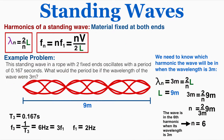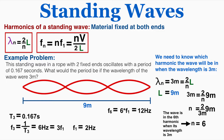The wavelength of 3 meters equals 2/n times L (which is 9 meters), so solving gives the sixth harmonic. That means it looks like a wave with 6 antinodes, each full wavelength being 3 meters long. The frequency of the sixth harmonic is 6 times the fundamental frequency, which equals 12 Hz. The period is then 1/12 = 0.083 seconds. That is the period of oscillation when the wavelength is 3 meters instead of its current 6 meters.